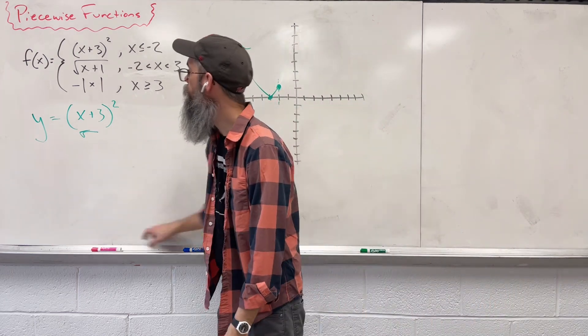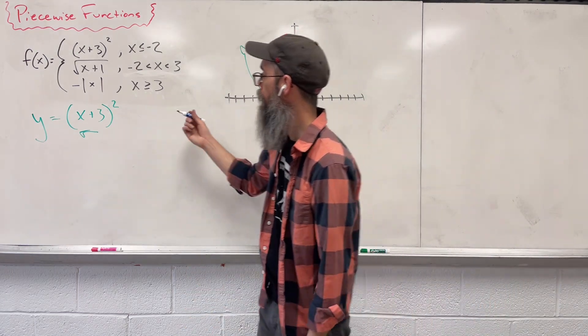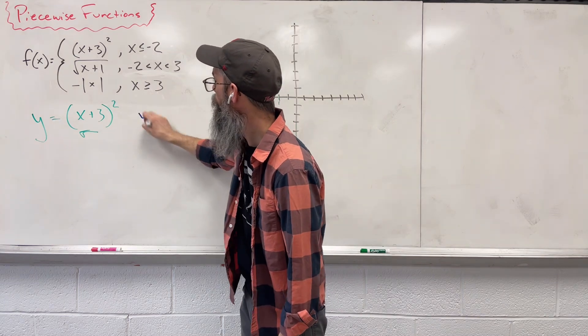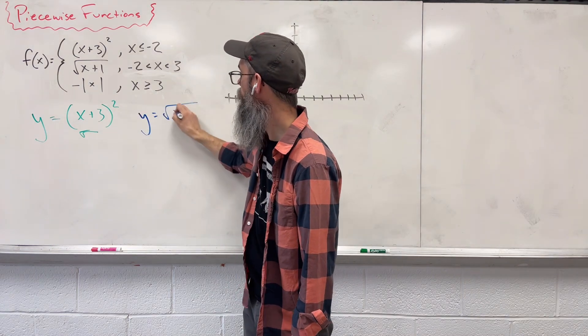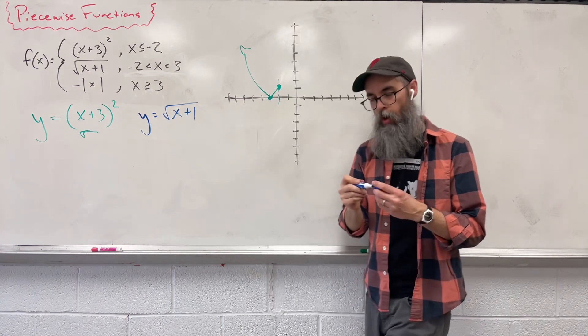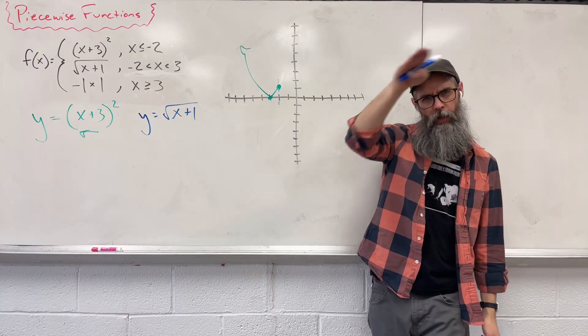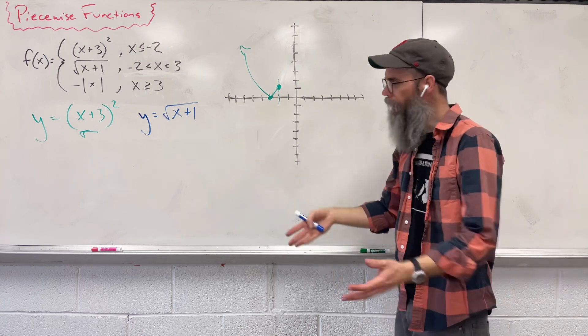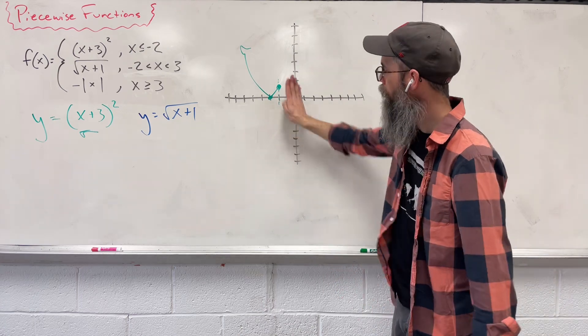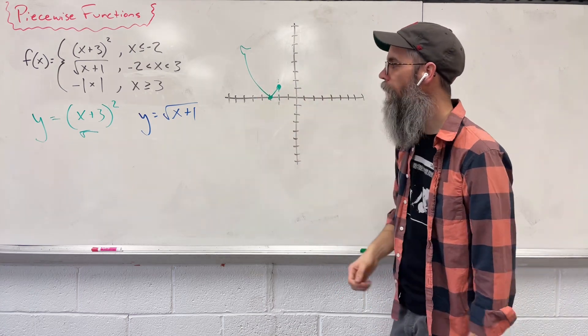We have y equals square root of (x + 1). So a square root function, we should know, is kind of like a parabola, kind of like this half arc, but on its side and only half of it. So if we took that, knocked it to the side, there you go.